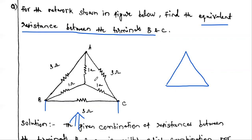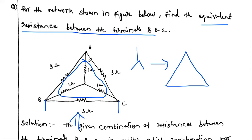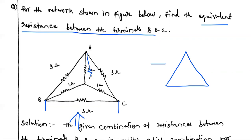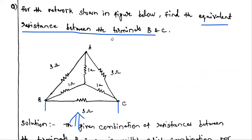To reduce this complex network to one single resistance, we may use two methods. In method one, convert the inner star connection into delta — then two delta connections are available and the two resistances appear in parallel, which you can simplify. Alternatively, in method two, convert the outer 3 ohm delta into star — then two star networks are in parallel and you reduce to a single resistance. Both methods give the same final answer.